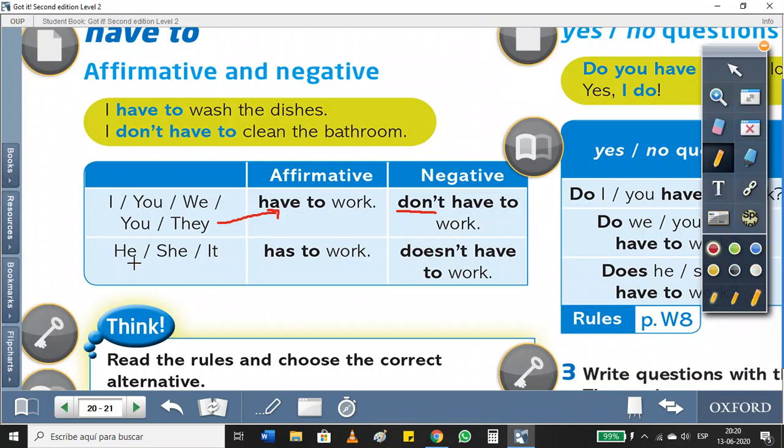Now we have he, she, and it. Y acá hay una diferencia because with them we're gonna use 'has to'. Always, siempre vamos a usar 'has to' with he, she, and it. And in the negative sentence, we're gonna use 'doesn't have to'. Acá ven, have to and have to, pero son diferentes. Porque para estos I, you, we, you, and they we're gonna use 'don't', y para he, she, and it we're gonna use 'doesn't'.